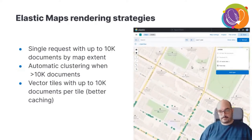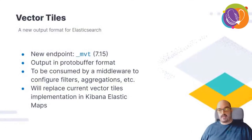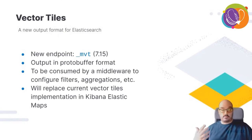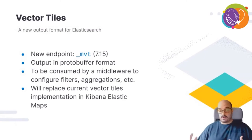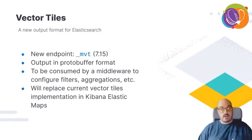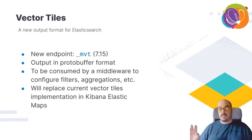A major new feature in Elasticsearch is the vector tiles endpoint. Previously, Elasticsearch could only output JSON responses, but now there is a new endpoint that produces protocol buffers — very compact chunks of geospatial data. This allows filters, aggregations, and queries to be transported to clients very quickly. It will also replace the current vector tile implementation that lives inside the Kibana server.